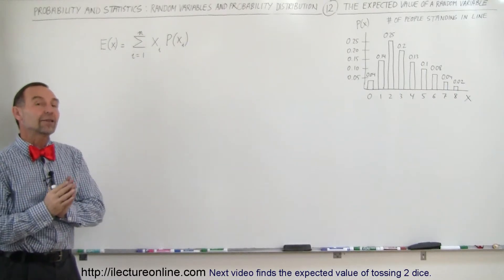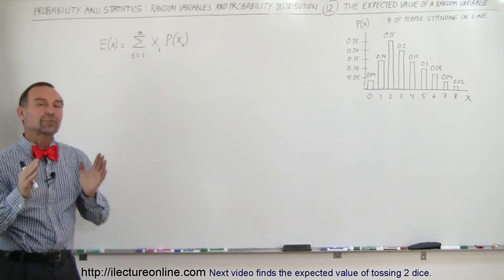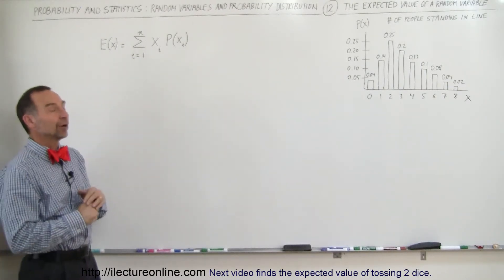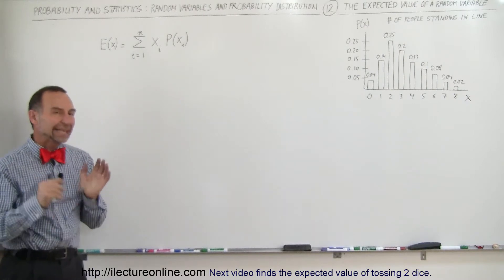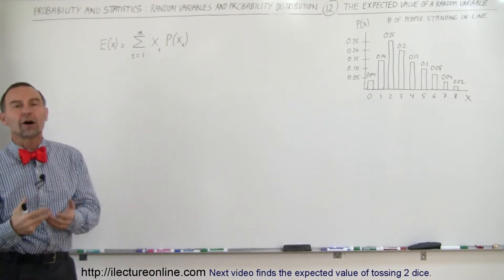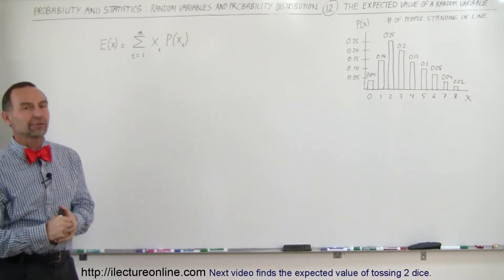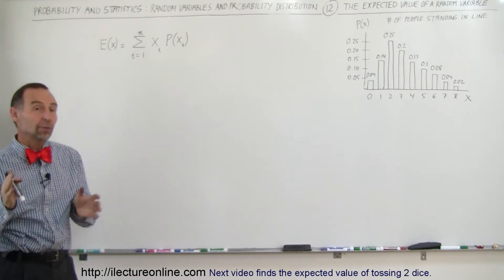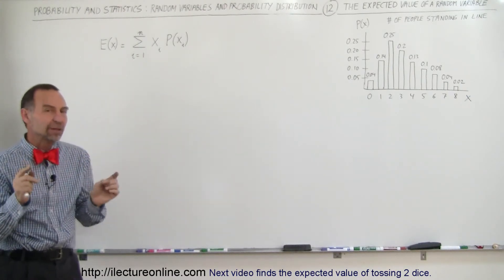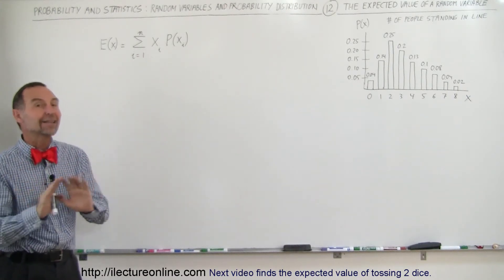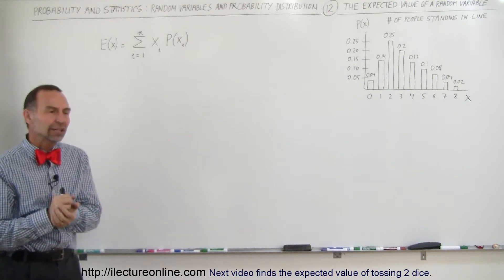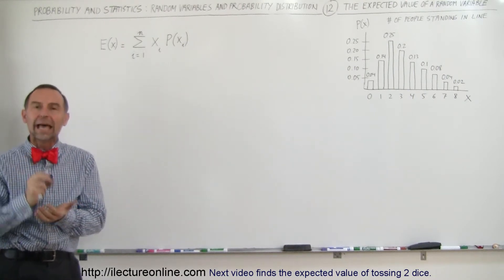Welcome to ElectronLine. Now let's talk about the expected value of a random variable — a term that's often confused with the average of a random variable. We saw what the average was in the previous video. This is what we call the expected value and it's not the average; it's basically the weighted average.